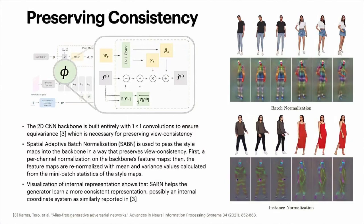Spatial Adaptive Batch Normalization (SABN) is used to pass the style maps into the backbone in a way that preserves view consistency. First, a per-channel normalization is applied on the backbone's feature maps. Then, the feature maps are re-normalized with mean and variance values calculated from the mini-batch statistics of the style maps.